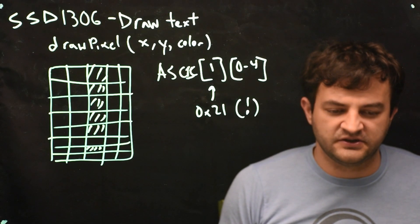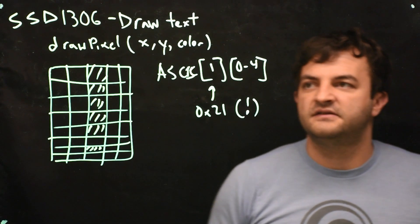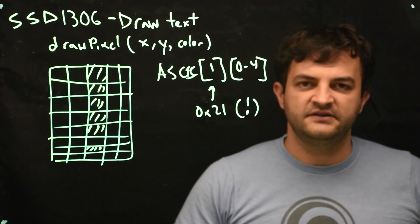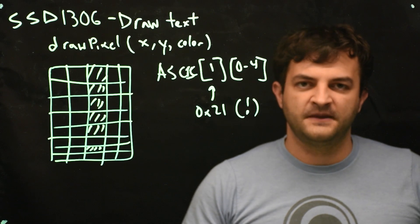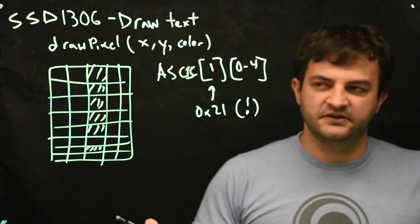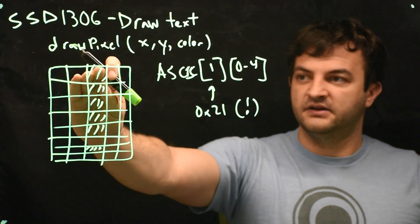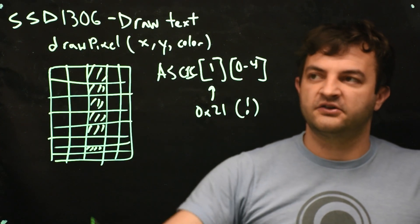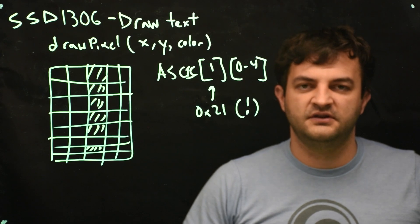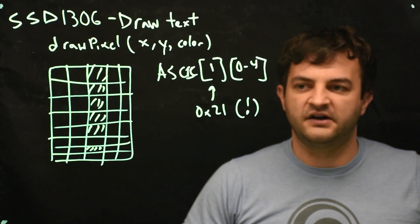So what we will need to do in code is figure out what is the string that we would like to draw, find the character in the string, go to the ASCII table to figure out what are the pixels that are on and off for that character, and then repetitively call drawPixel to turn those on and off.